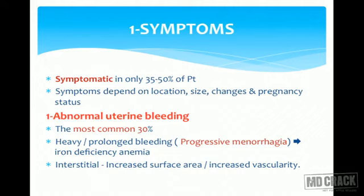Now let's see how fibroid presents. They are symptomatic in only 35 to 50 percent of patients, so may remain asymptomatic for a long period. Symptoms depend on the location, size, and changes undergone by the fibroid. The most common symptom is abnormal uterine bleeding, usually seen in 30 to 40 percent of patients. Usually there is heavy and prolonged bleeding — progressive menorrhagia.